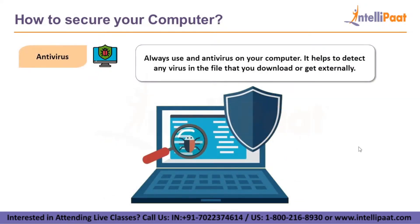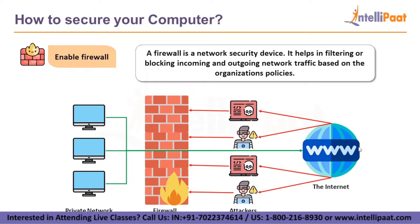Next we have antivirus — always use antivirus on your computer. It helps to detect any virus in files that you download or receive externally. Always keep your firewall enabled. A firewall is a network security device that helps filter or block incoming and outgoing network traffic based on the organization's policies. Most of us have a habit of not checking whether the firewall is enabled or disabled — one of the worst things that could happen is if someone attempts to take control remotely. So always enable the firewall on your computer.